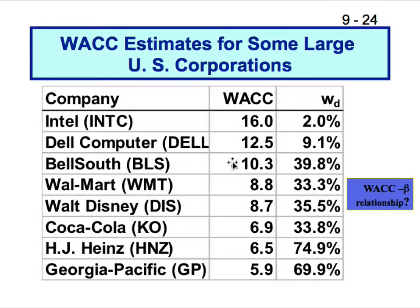There seems to be an inverse relationship between the cost of capital of technology firms versus more stable companies like Georgia Pacific, Heinz, Coca-Cola, and Walt Disney. These stable companies are financed more by debt, while technology-space companies have a lesser proportion of debt.